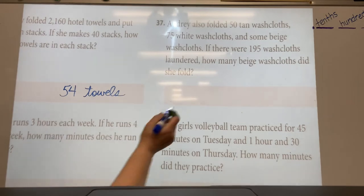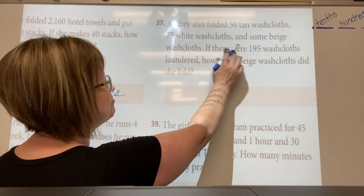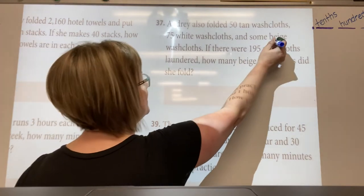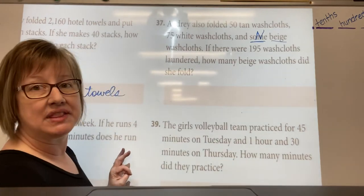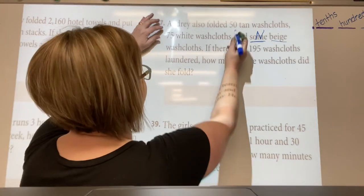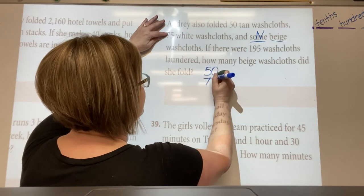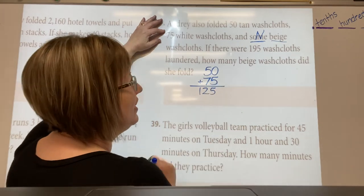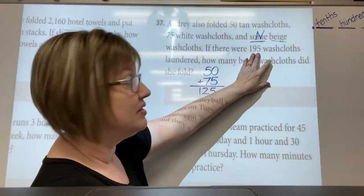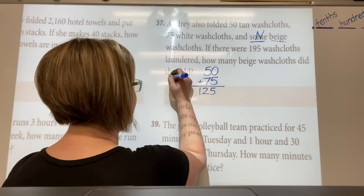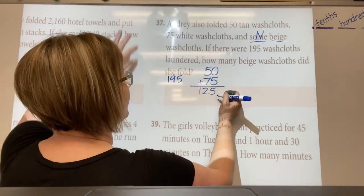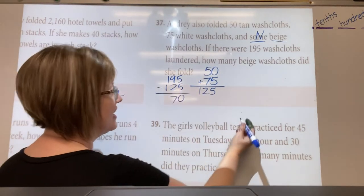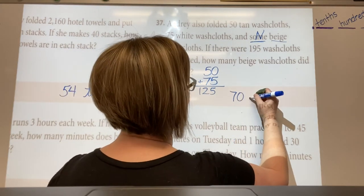Okay, then Audrey folded 50 tan washcloths, 75 white washcloths, some beige washcloths. If she folded a total of 195, how many of these were there? This is the letter n, we don't know what that number of beige is. Add what we do know: we have 50 and 75, and that equals 125. And then subtract that from the total. There was a total washcloths of 195, so subtract this total of white and tan, and what does that equal? Equals 70. So she had 70 beige.